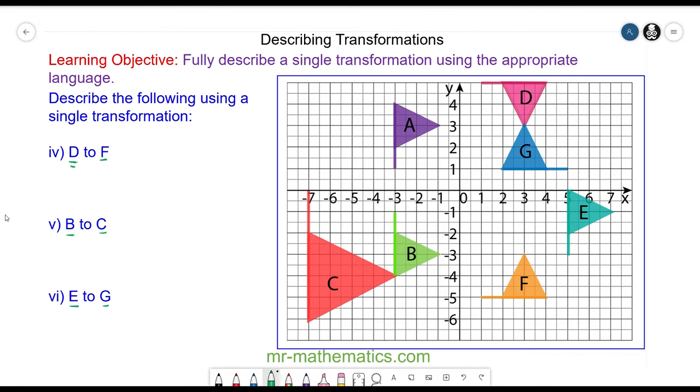So to map D onto F well they are two congruent shapes, so it will be a reflection. The distance between this vertex and this vertex is 6, so the mirror line will be halfway and again that is along the x-axis. So the x-axis is the mirror line. You could also call it when y equals 0.